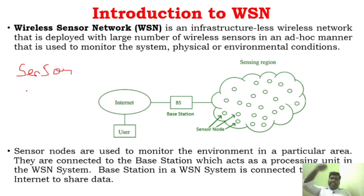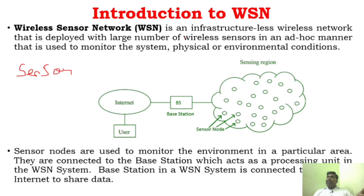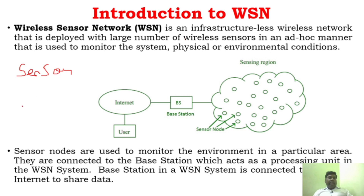This network is an infrastructure-less network. I say infrastructure-less because it is just deployed randomly — there is no specific pattern for it. If you take computer networks, there are different types like LAN, WAN, MAN, and you have certain infrastructure for them. But in wireless sensor networks there is no defined structure. That is why it is called an infrastructure-less or ad hoc network. It can be defined as an infrastructure-less wireless network deployed with a large number of wireless sensors to monitor physical or environmental conditions.